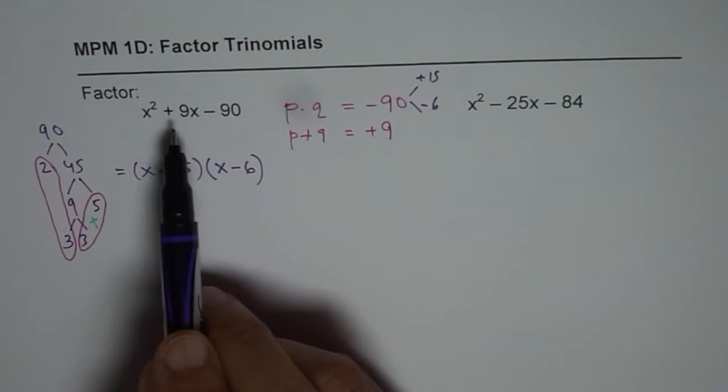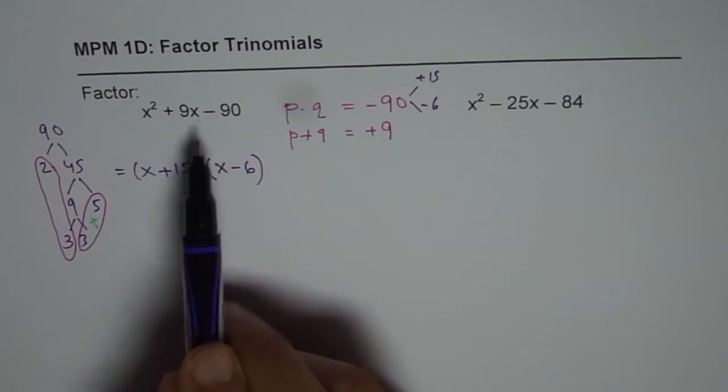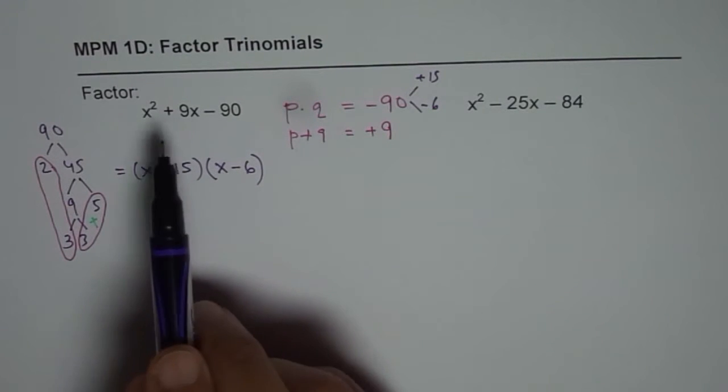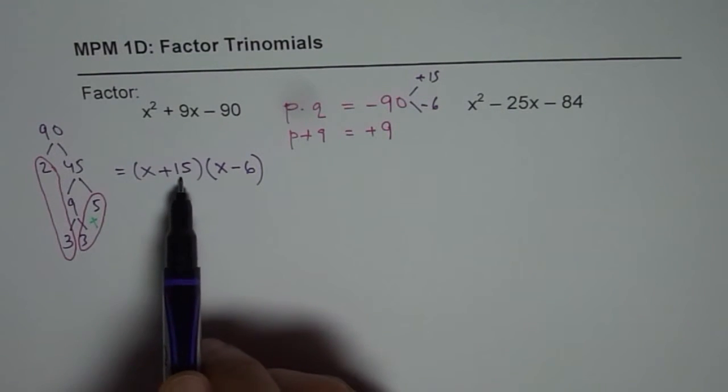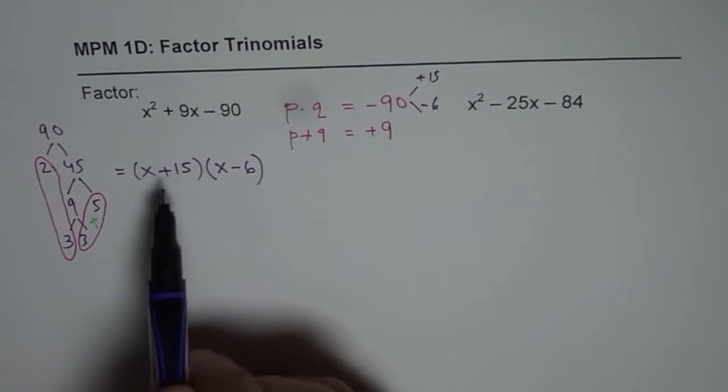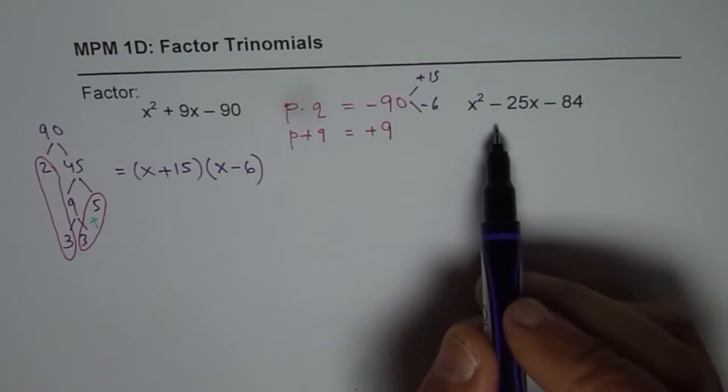The idea is product is negative so the signs are different. Sum is positive so higher number is positive. You see that is the criteria. Now let's look into the next one.